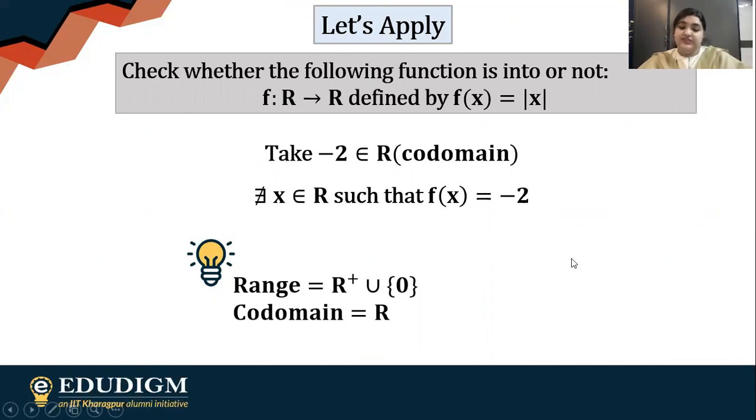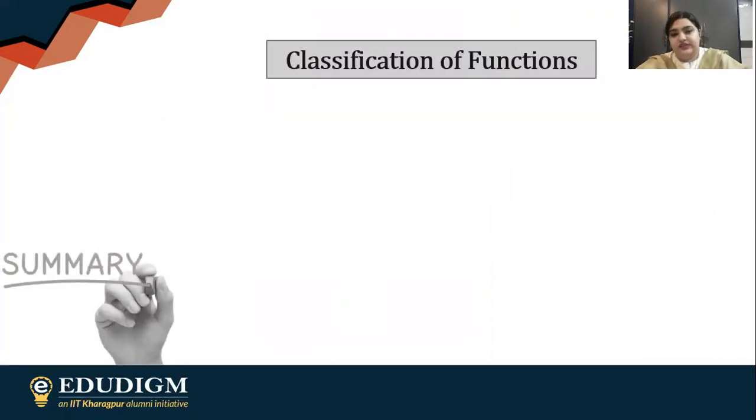Now here's the thing which is very important: the range of the mod function is R+ union {0}, so it's either zero or positive real numbers, and the codomain is R. So it's a strict or proper subset. That's why this is into. I hope you understand the classification of functions.